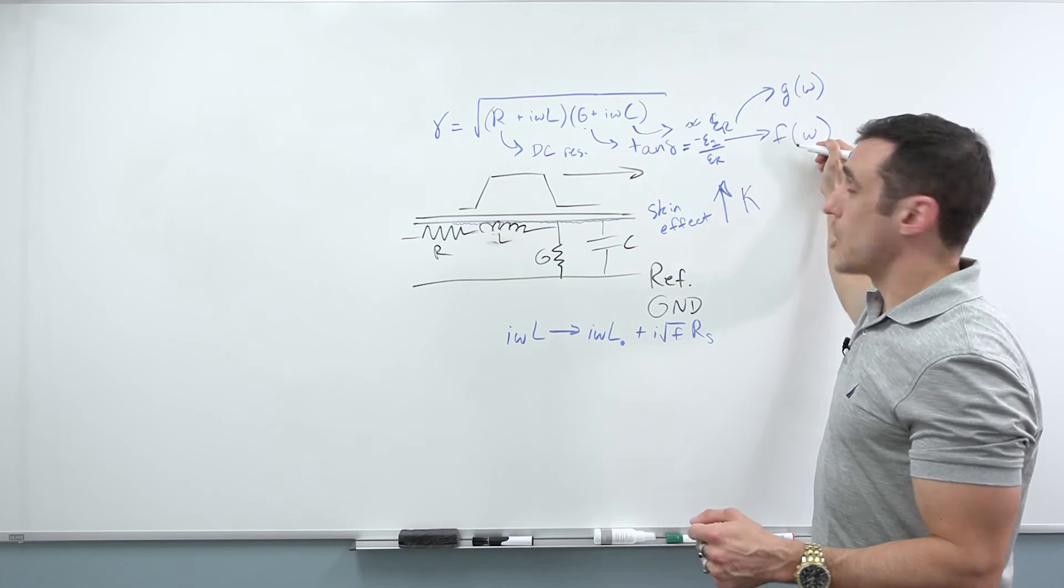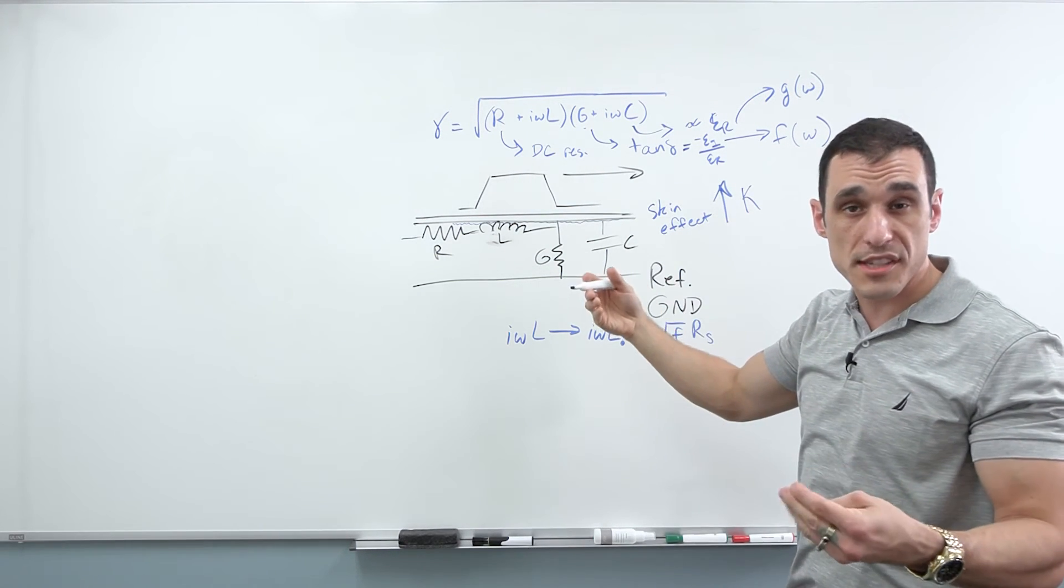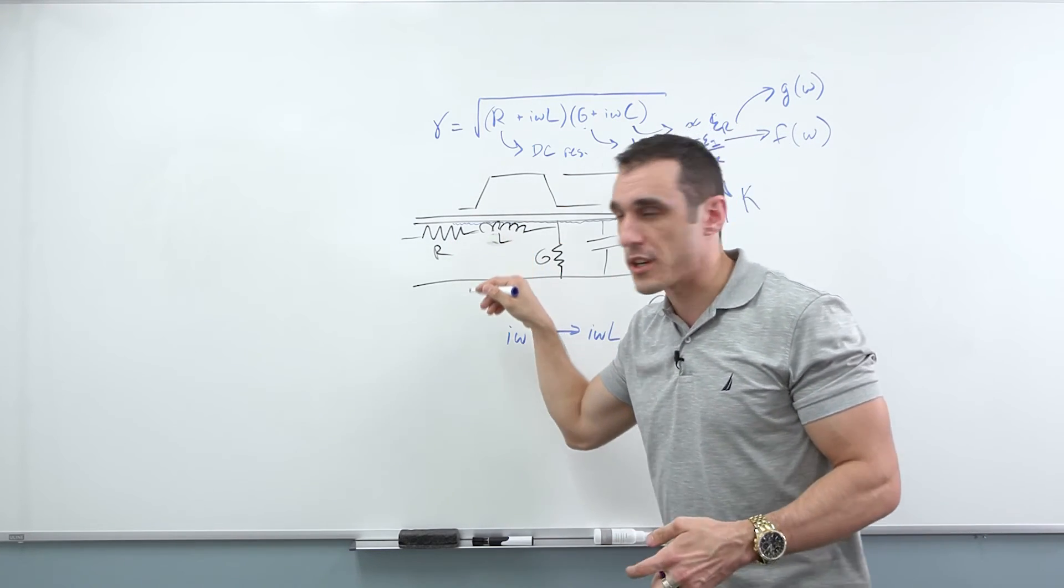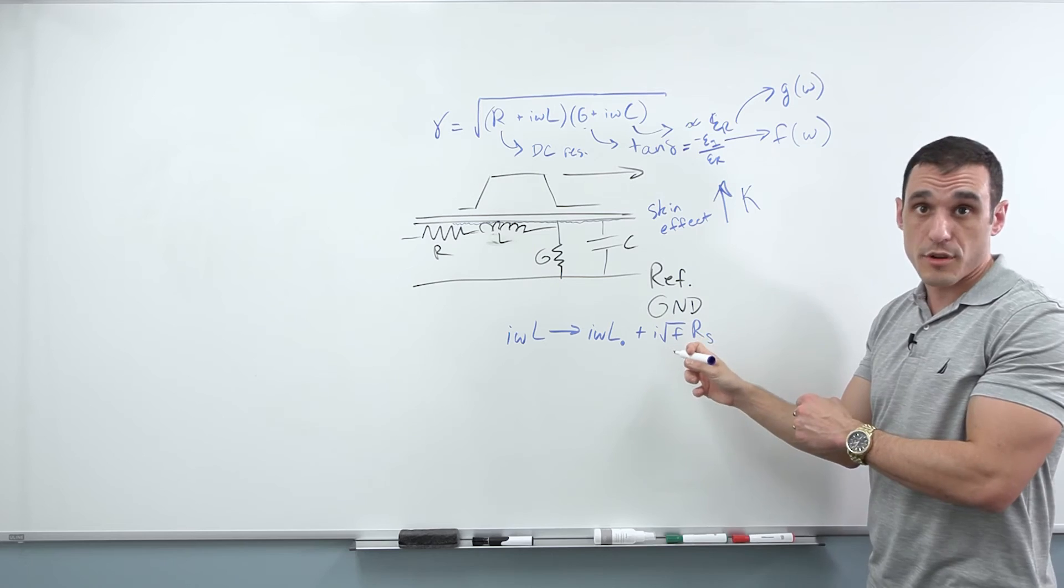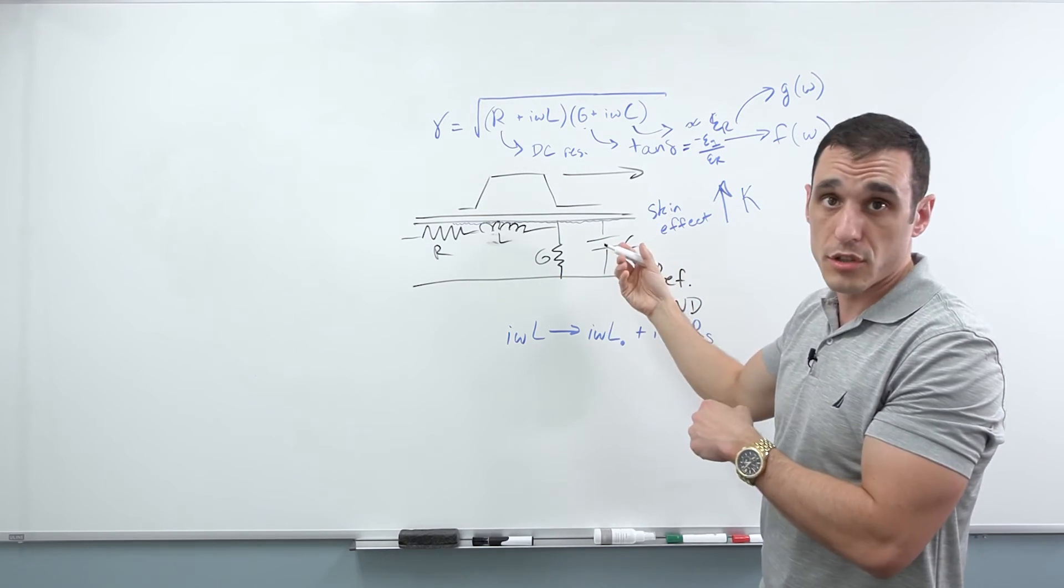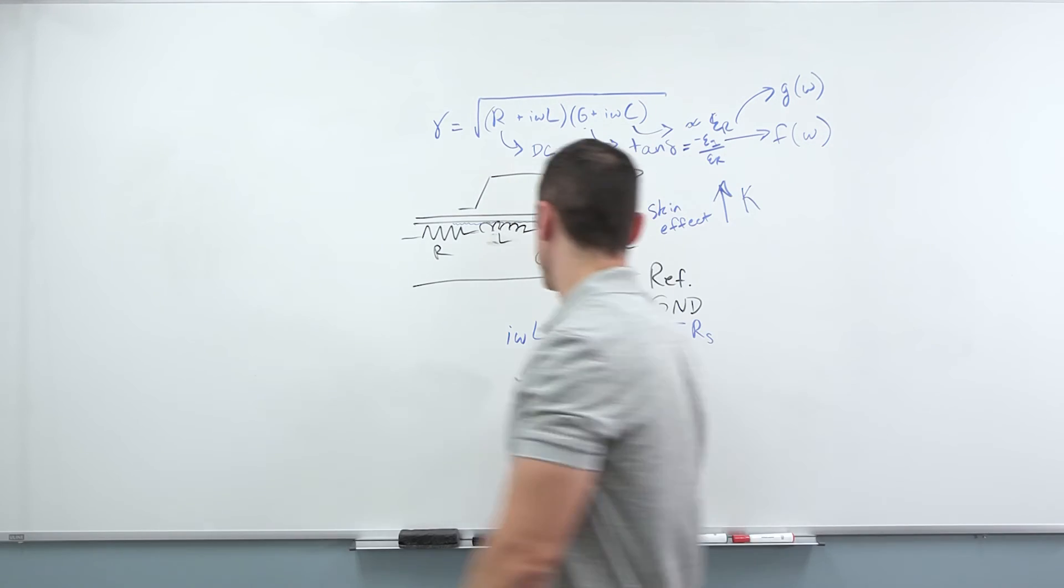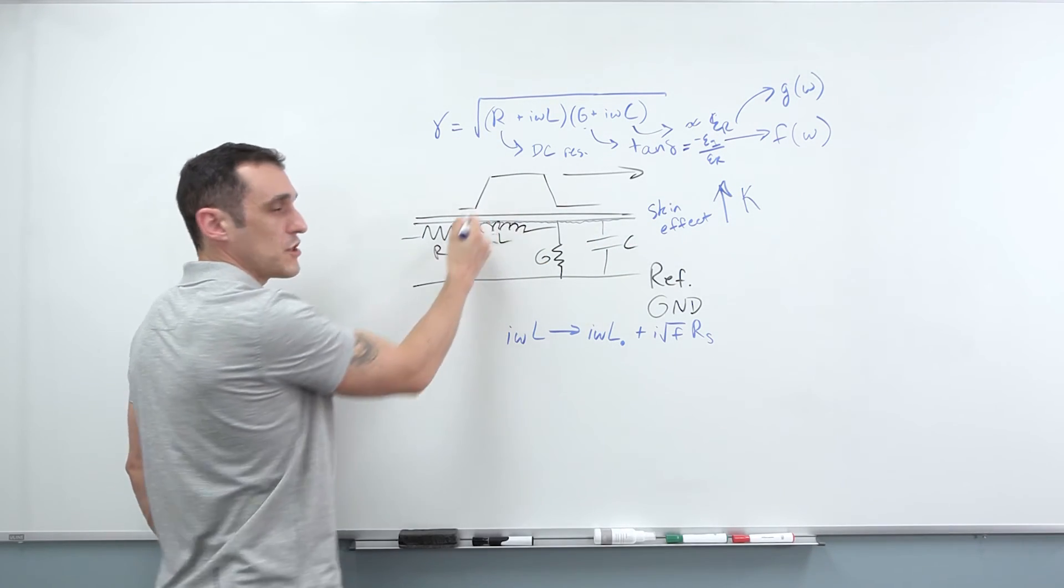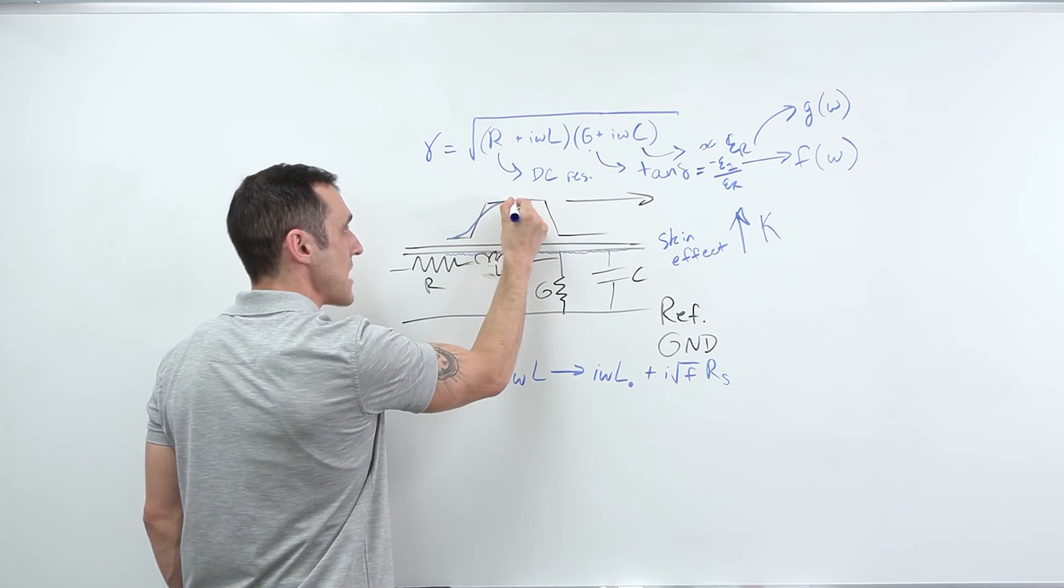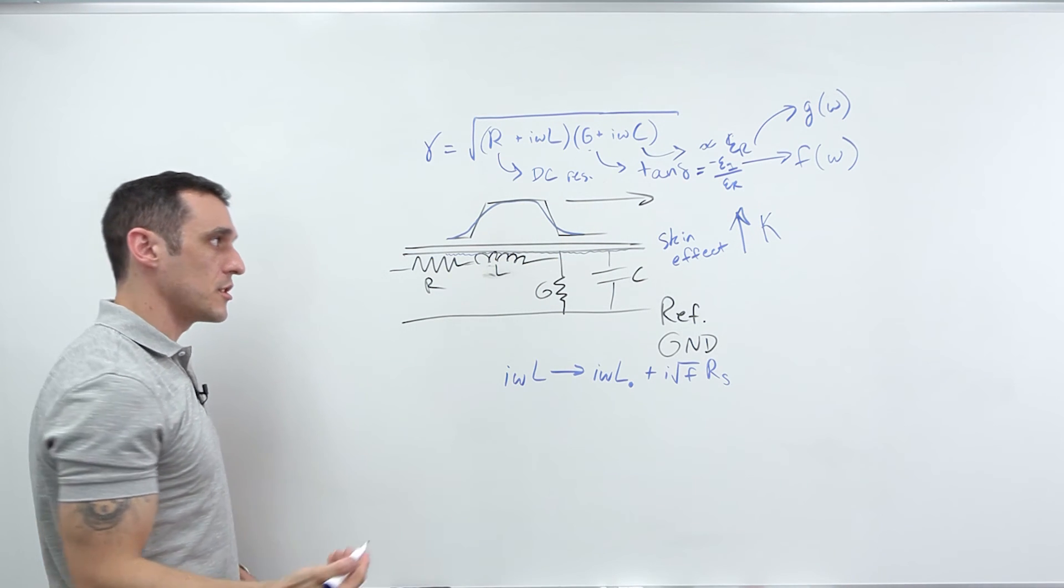And so this is one of the things that contributes to distortion of this signal as it propagates along an interconnect. So you have losses that are different at different frequencies. So the higher frequency components tend to get lost more due to absorption in the dielectric. But the skin effect also contributes to that. So all of this stuff works together to give you some additional losses as a signal travels along the transmission line. And so the net result is that you don't actually have these sharp edges here. Essentially what happens is the signal kind of smooths out like this as it propagates along the trace.